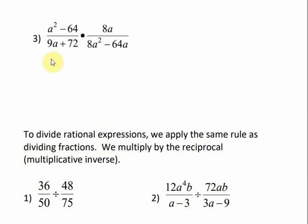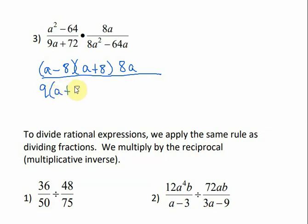In number 3, this first numerator, that's the difference of perfect squares. That would be a minus 8, a plus 8. And then I have an 8a. Here, what can we do for that, the 9a plus 72? We can factor out a 9. So I'm left with a plus 8.